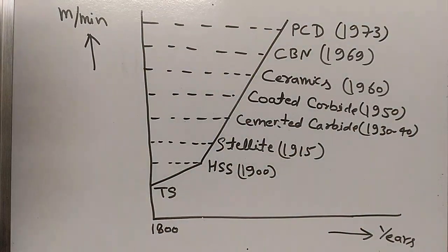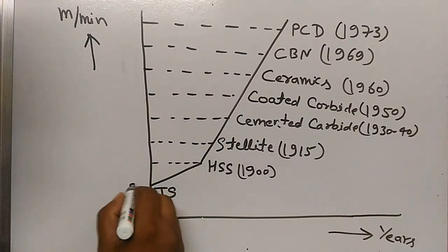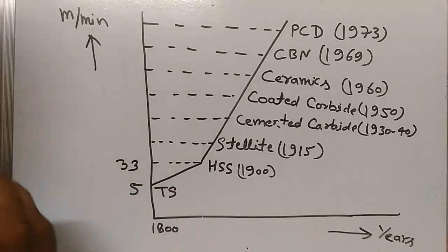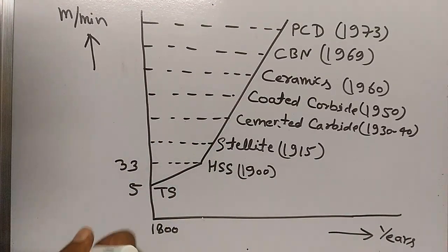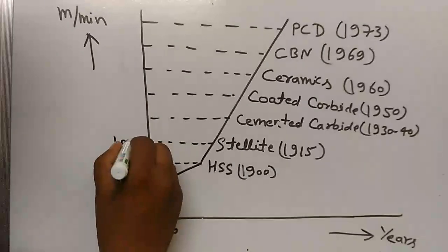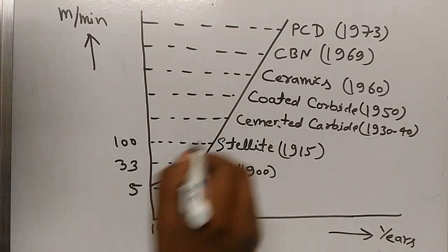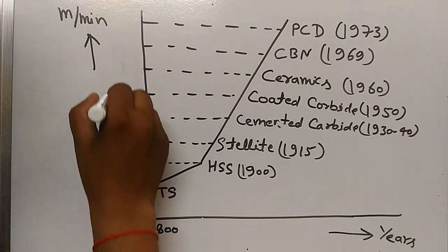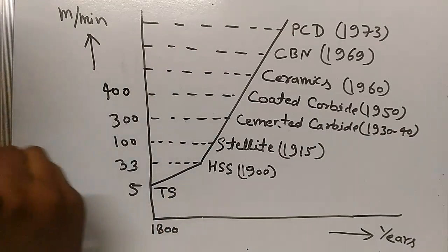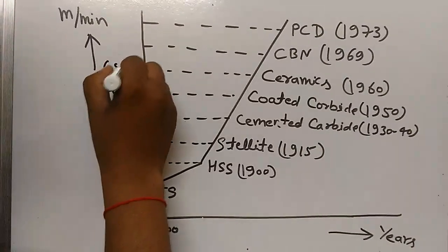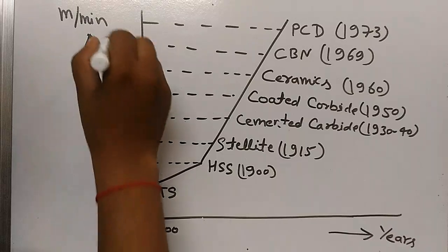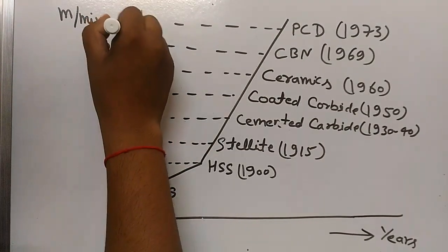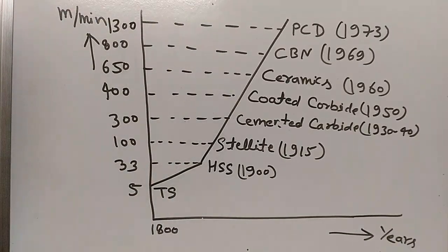The maximum cutting speeds are: tool steel — 5 m/min; high speed steel — 33 m/min; stellite — 100 m/min; cemented carbide — 300 m/min; coated carbide — 400 m/min; ceramics — 650 m/min; CBN — 800 m/min; and PCD — 1300 m/min.